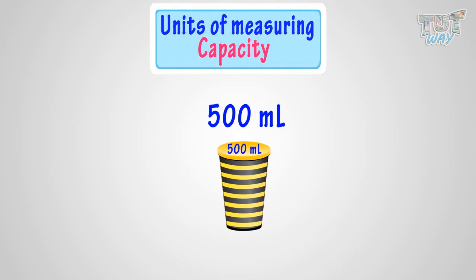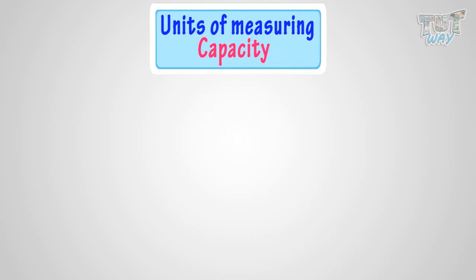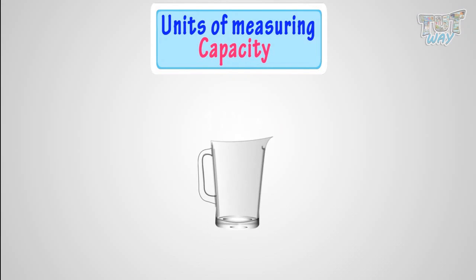Now, let's learn how much quantity is one liter. Here, we have a jug. The exact amount of water this jug can contain is one liter. That is, it can contain one liter of water or any liquid.